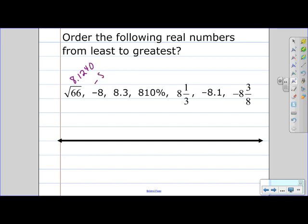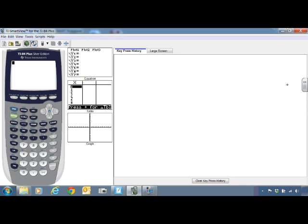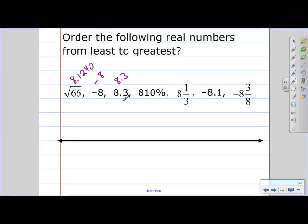We don't need to convert negative 8 or 8.3, but let's convert 810%. So let's go back to our calculator. The way to convert a percent to a decimal is to type in your percent and then divide by 100, since all percents are out of 100. And then press ENTER. So 810% is 8.1.